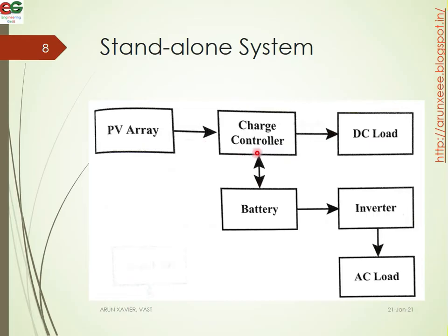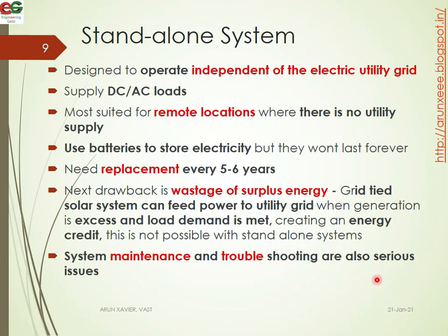The PV array is directly connected to the DC load. There is no need for conversion for DC loads such as 12-volt fans. The battery output is connected to the inverter, which converts DC to AC, and it is connected to the AC load. This system is designed to operate independently of the electrical utility grid and can supply both AC and DC loads.